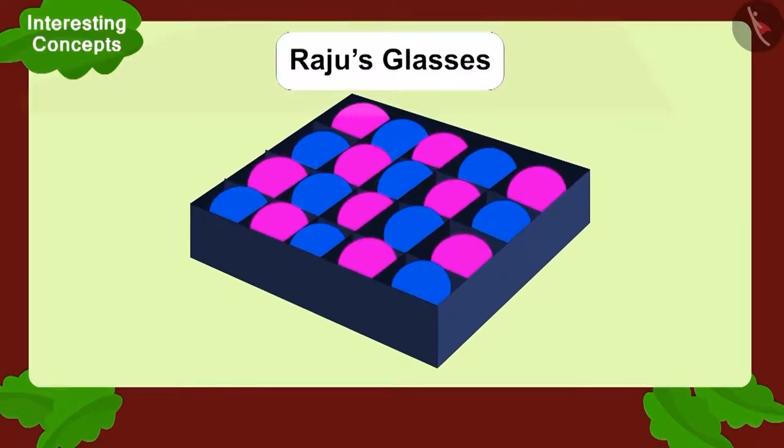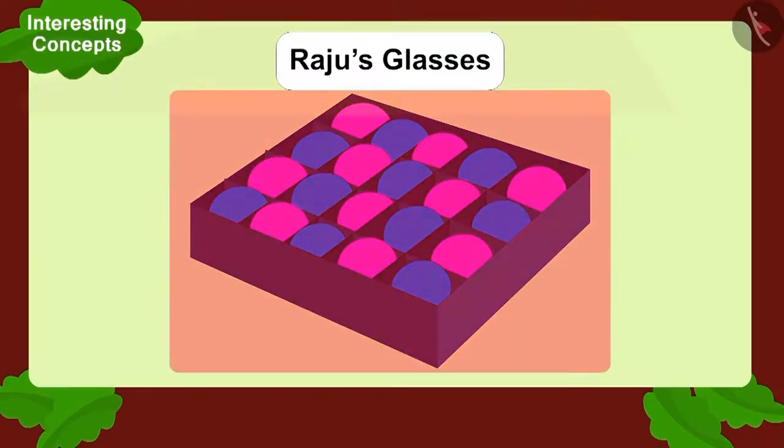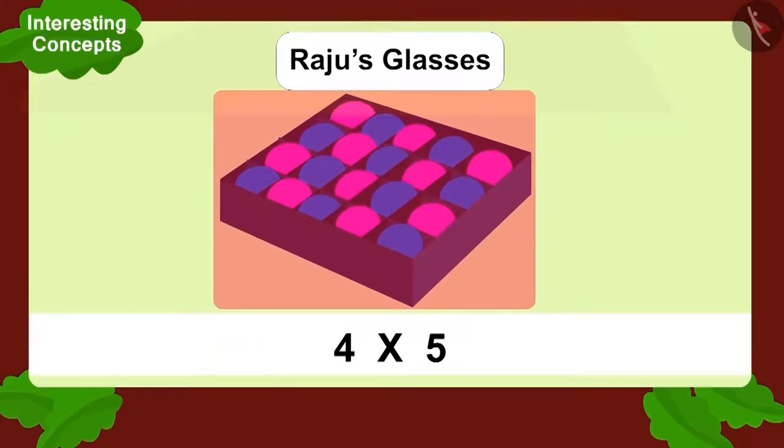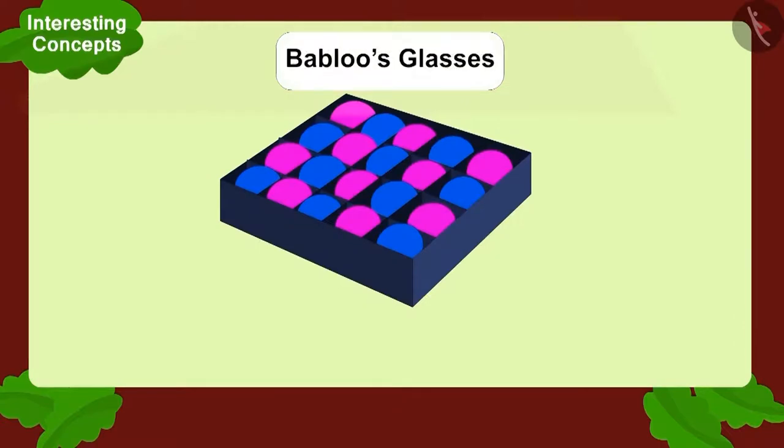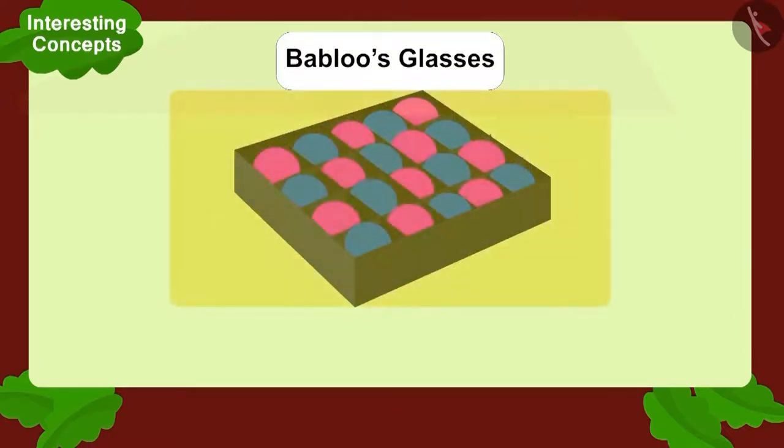Raju wore his glasses and looked at the box. He saw a multiplication like this. Now, Bablu wore his glasses and looked at the box. He saw a multiplication like this.